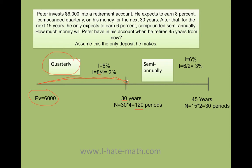Right here, there's only 15 years left. But the problem tells me that now he's going to be compounding semiannually. From year 30 to year 45, I only have 15 years. But I will have 30 periods because 15 times 2 is 30.